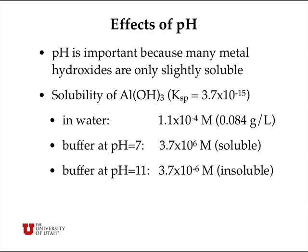On the other hand, if we try to dissolve aluminum hydroxide in a buffer solution at pH 11, that maintains the hydronium ion concentration at 10 to the minus 11 moles per liter and the hydroxide ion concentration at 10 to the minus 3 moles per liter, which is a relatively high value. Under these conditions, aluminum hydroxide is quite insoluble — only 3.7 times 10 to the minus 6 moles per liter can go into solution. The buffer maintains high hydroxide concentration, which inhibits the solubility.